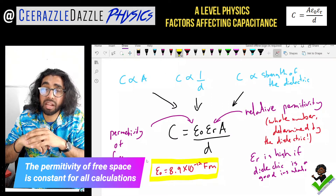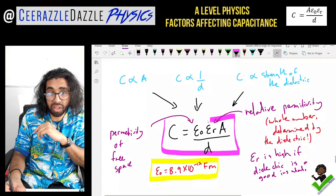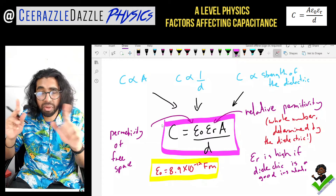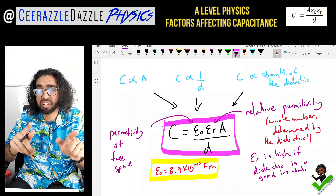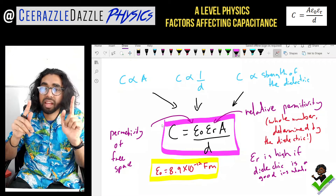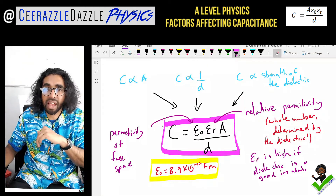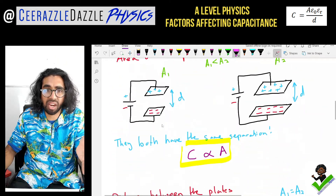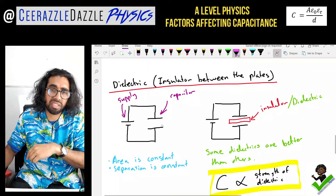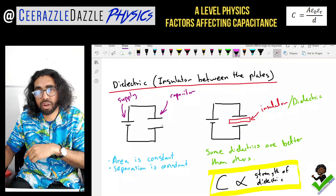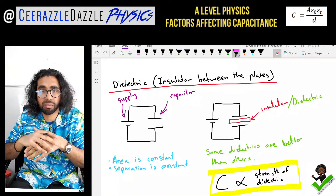ε₀ is equal to 8.9 × 10⁻¹² F/m. Make sure you're able to use this formula when tackling questions — it will be given to you in the exam, but make sure you know where it comes from. So: C = ε₀εᵣA / d, where ε₀ is the permittivity of free space, εᵣ is the relative permittivity determined by the dielectric, A is the area of the plates, and d is the separation. That's it for another session of Razzle Dazzle Physics — like and subscribe, comment below with any queries, ciao!